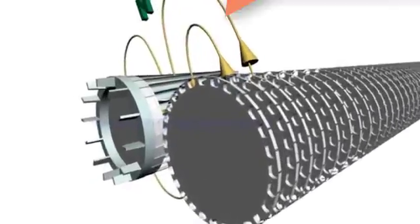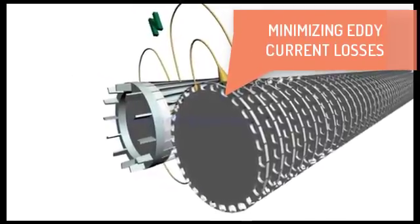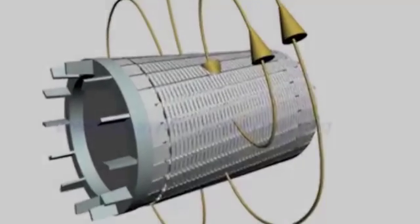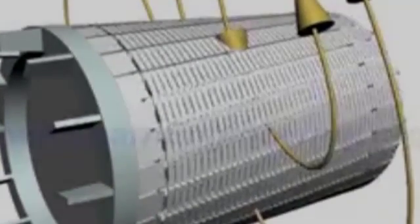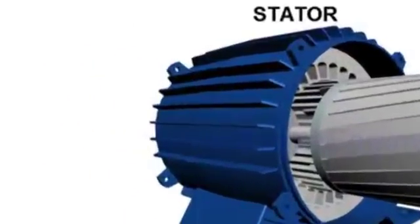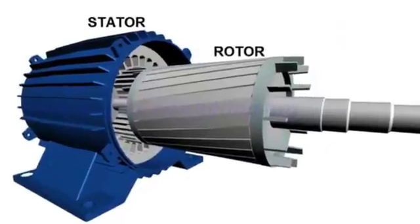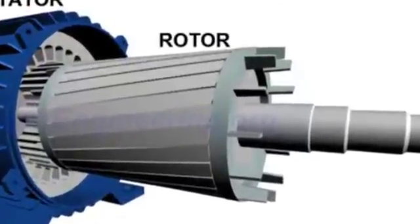The rotor also has disc-like laminations arranged in a stack manner throughout the body of the rotor to decrease or minimize the eddy current losses as much as possible. After the arrangement, the rotor looks like this, through which the rotating magnetic field passes. The rotor, being inside the stator, cuts those magnetic field lines and the force is experienced by the rotor coil, which moves the rotor in a rotational motion.